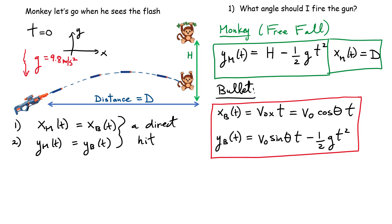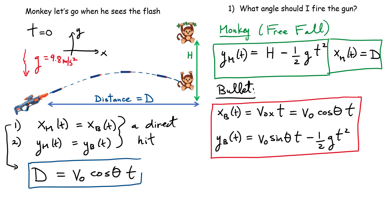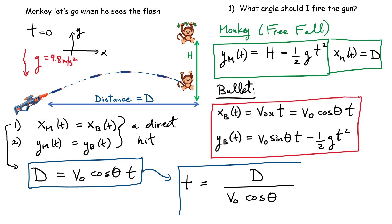Looking at equation one: the x-coordinate of the monkey is D, and it must equal the x-coordinate of the bullet, which is v₀ cos θ · t. This gives us the time of collision: t = D / (v₀ cos θ). So if the time for the objects to reach the same x-coordinate equals this expression, they will be at the same x position.